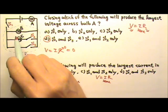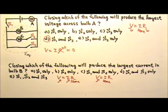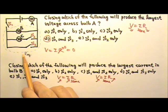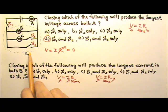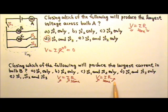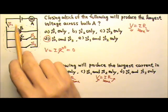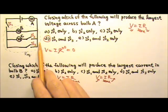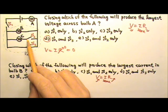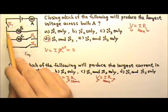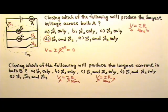If we want bulb B to get as much voltage as possible, that means we want this combination to get as large a resistance as possible. Because the more resistors we have in parallel, the smaller the equivalent. That means if we want the equivalent to be as large as possible, we want as few resistors in parallel as possible. Therefore, we should leave S2 and S3 open. So S1 is the only one we should close. So the answer is A.